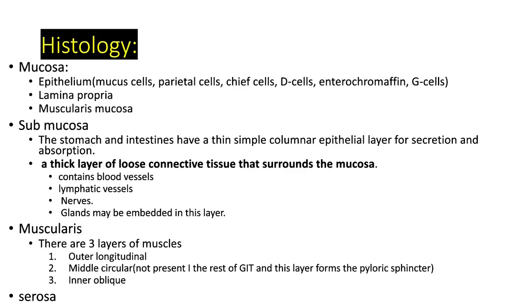The histology of the stomach consists of the following layers: mucosa, submucosa, muscularis propria, and serosa. The mucosa has three main sub-layers: the epithelium, lamina propria, and muscularis mucosa. The stomach and intestine have a thin simple columnar epithelium for secretion and absorption, and a thick layer of loose connective tissue surrounding the mucosa that contains blood vessels, lymphatic vessels, nerves, and glands.